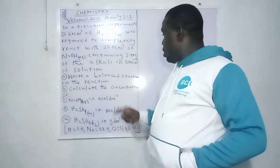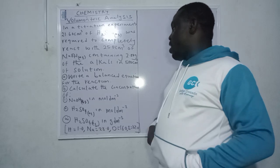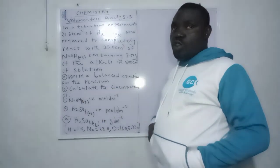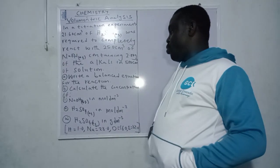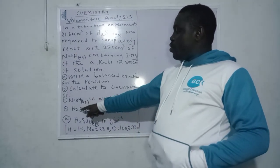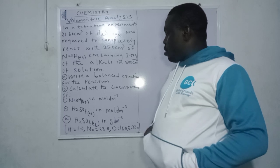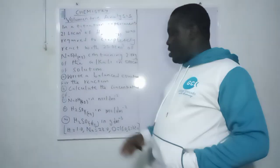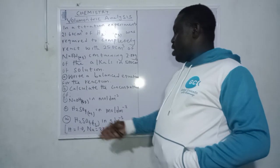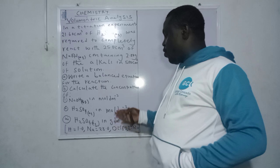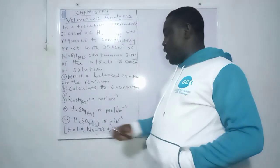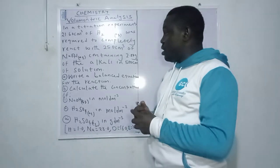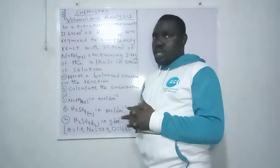The second part of the question says: calculate the concentration of sodium hydroxide in mol per dm³, then calculate the concentration of H₂SO₄ in mol per dm³, and also calculate the H₂SO₄ in gram per dm³. We are given the various relative atomic masses of the elements.